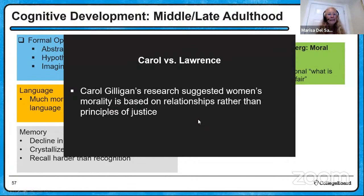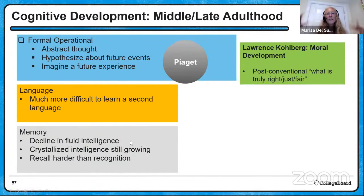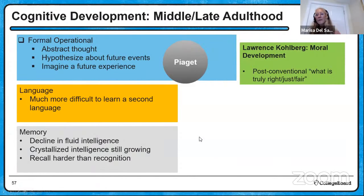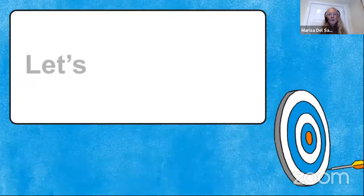In late adulthood we see a decline in fluid intelligence — the speed of processing and how quickly we remember things. Recall becomes much harder than recognition, with free recall especially declining. We're also now in post-conventional moral development — what's right, what's true, what's fair. Carol Gilligan pointed out that not everyone thinks morally the way Kohlberg describes: women tend to base moral judgments more on relationships than on principles of justice.